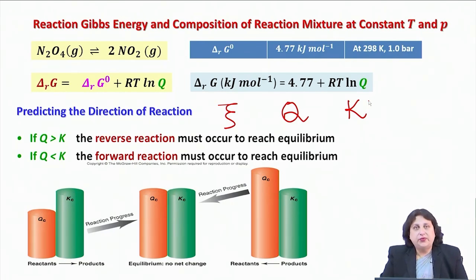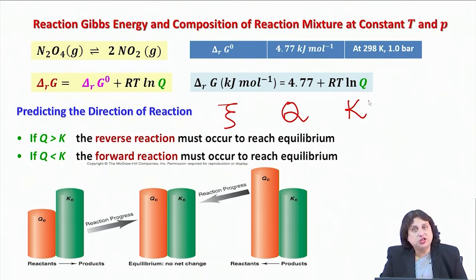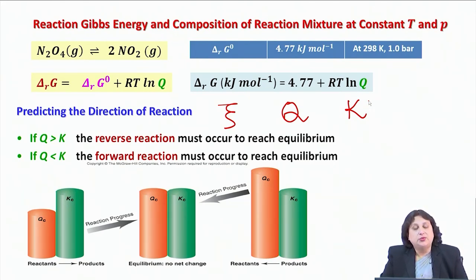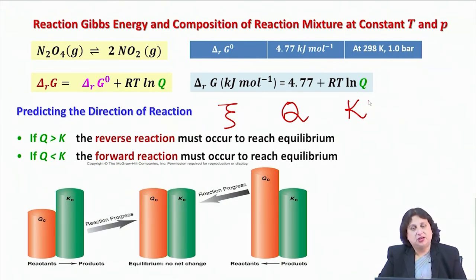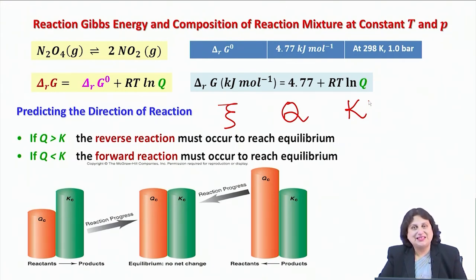With these informations, I can predict the direction of reaction. At a given stage, if Q is greater than K, you must say that the reverse reaction must occur to reach equilibrium. If Q is less than K, then you conclude that the forward reaction must occur to reach equilibrium. We have thus been able to describe the condition of spontaneous change and the condition of equilibrium in a chemical reaction if we have information regarding the concentration of the reaction mixture and the equilibrium constant. Thank you.